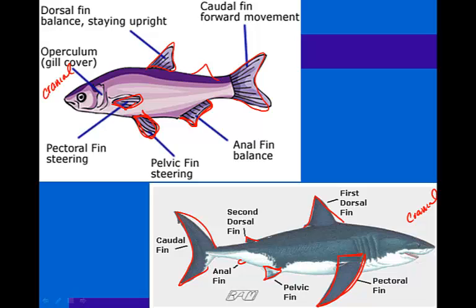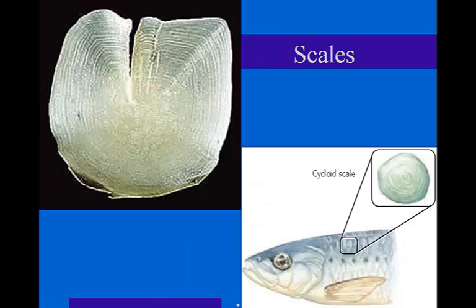The evolution of the jaw and the paired fins allow fish to become more predatory and live in much different habitats. Looking at scales, scales help protect fish from scrapes, parasites, and other external injuries, and there's a variety of different types of scales. The vast majority of bony fish — any fish that have jaws but not sharks, skates, or rays — have cycloid scales.